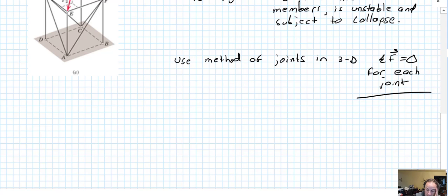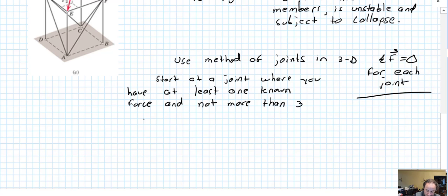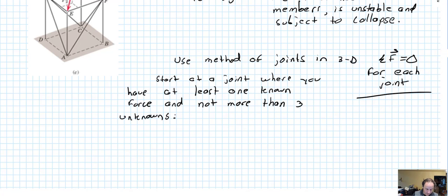Just like with the plane trusses, start at a joint where you have at least one known force and not more than 3 unknowns. Because you have the potential to have 3 equations, one in each dimension. So you have the potential to deal with 3 unknowns, but not more than that.